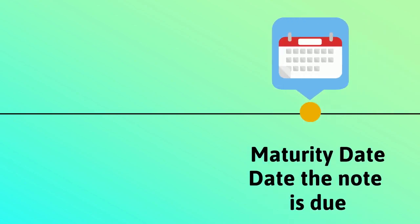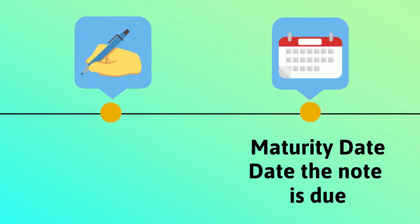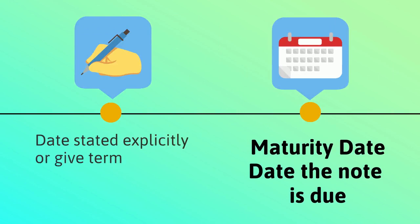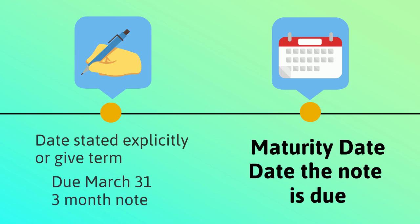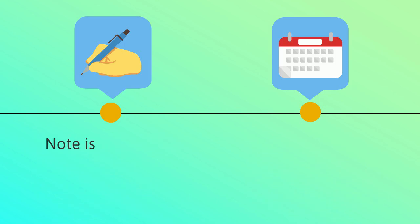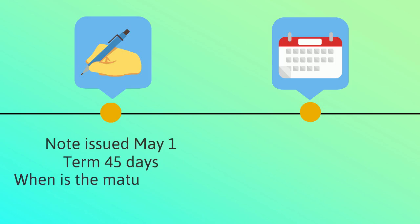The date the note is due is called the maturity date. Notes can state this date explicitly or simply provide the term of the note. For example, a note issued on January 1st may state it's due on March 31st, or state that it's a three-month note. It gets interesting when the term is stated in days. For example, a note issued on May 1st with a term of 45 days — when is the maturity date? June 15th.